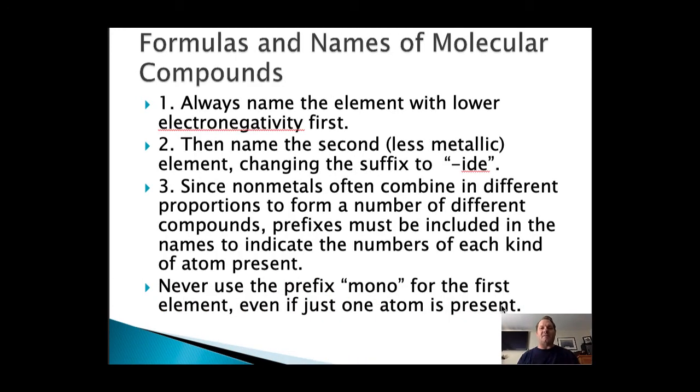When we talk about the formula and names of molecular compounds, we're going to name the element with a lower electronegativity first. So the one that's more to the left or further down gets named first. Then we're going to name the second less metallic element, changing its suffix to -ide as we did with the ionic monatomic ions. Since non-metals often combine in different proportions to form a number of different compounds, prefixes must be included in the names to indicate the numbers of each kind of atom present. We never use the prefix mono for the first element, however. We only use that for the second element if only one atom is present.